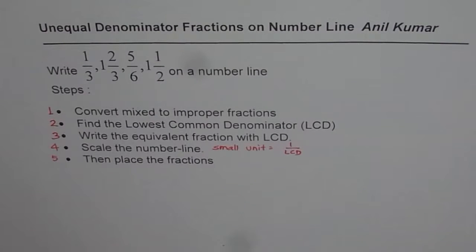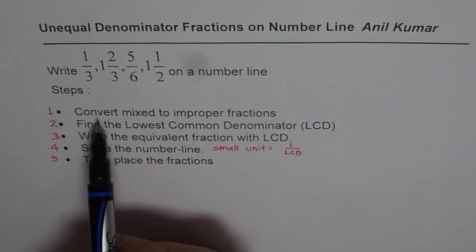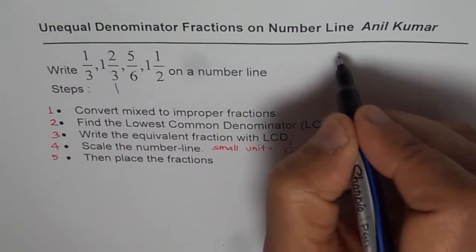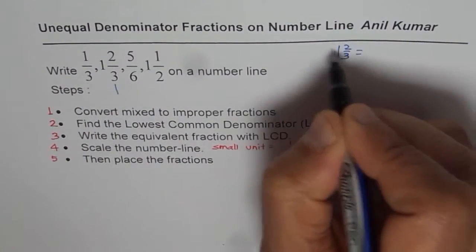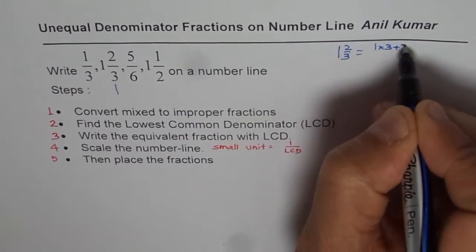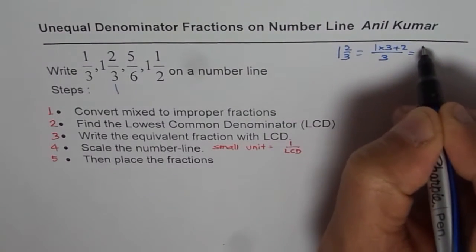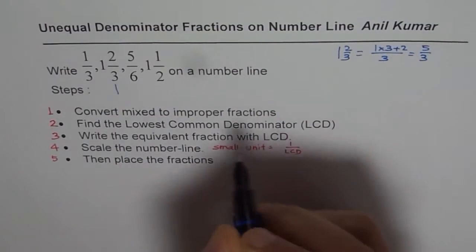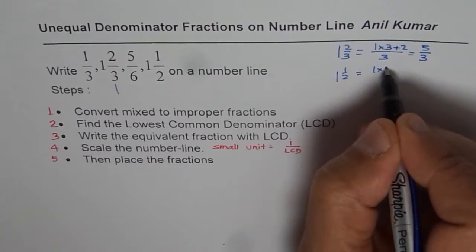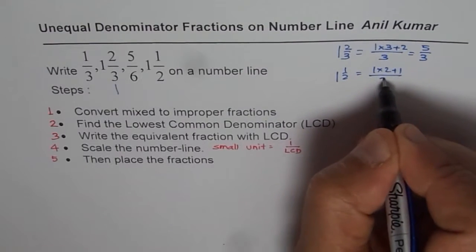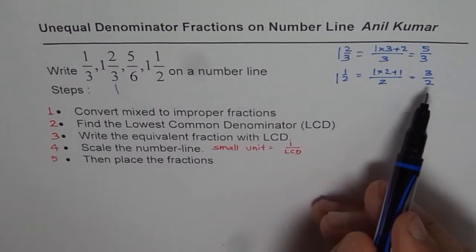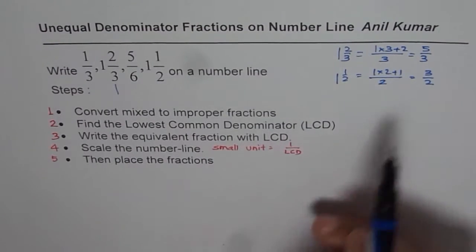Let us follow these steps one by one. The first one is convert mixed to improper fractions. So we have two mixed fractions. The first one is 1 and 2 over 3. To convert to improper, multiply 1 by 3 and add 2. Denominator remains 3 itself. 3 plus 2 is 5, so we get 5 over 3. The second one here is 1 and a half, which is 1 times 2 plus 1 over 2. That is 2 plus 1 is 3, 3 over 2. So that is how you can convert them to improper fractions.